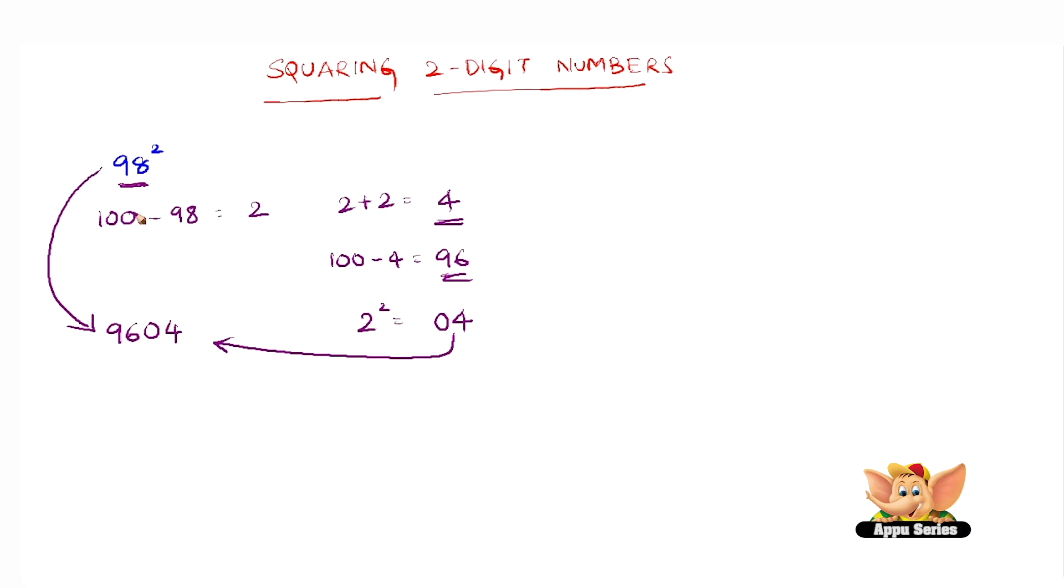Now let us quickly see another example, which is 97 square. Let us subtract 97 from 100, which gives us 3. Doubling 3 gives us 6. Let us subtract 6 from 100, which gives us 94.